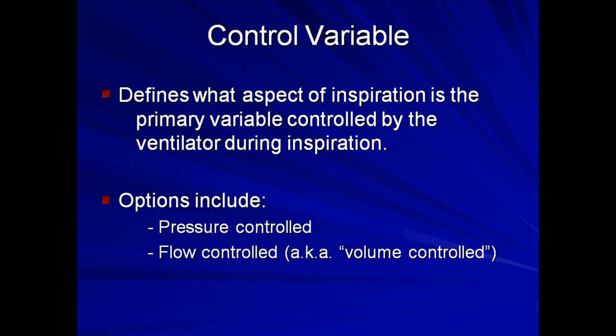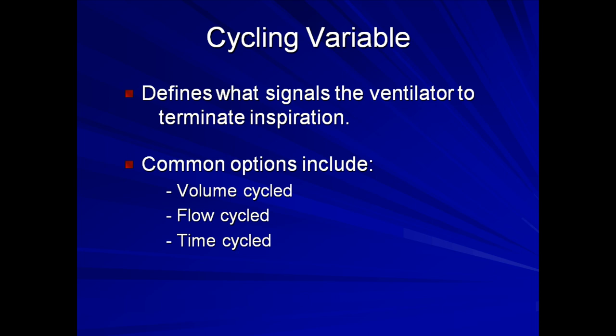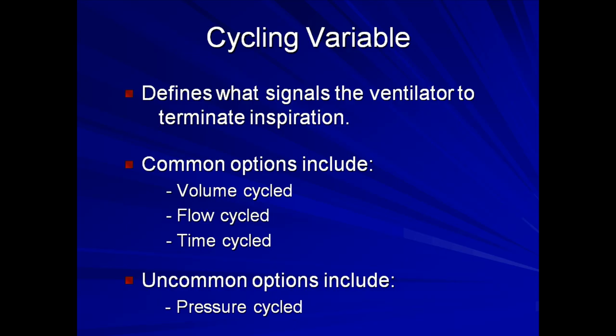The cycling variable defines what signals the ventilator to terminate inspiration. For example, with volume cycled ventilation, the ventilator will cease inspiration after a preset volume has been delivered. With flow cycled ventilation, the ventilator will cease inspiration after airflow drops below a preset threshold, typically approximately 25% peak flow. Ventilators can also be time cycled or pressure cycled. The cycling variable has some overlap with the control variable and the two are frequently used interchangeably, although some would say this is incorrect usage of the terms.